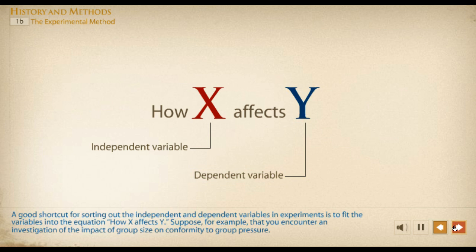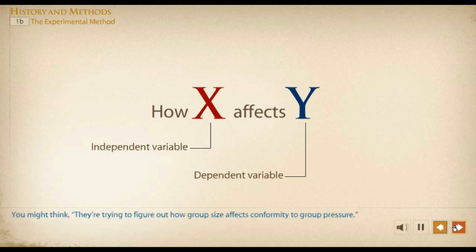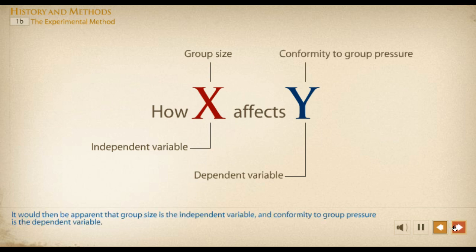A good shortcut for sorting out the independent and dependent variables in experiments is to fit the variables into the equation 'how X affects Y.' Suppose, for example, that you encounter an investigation of the impact of group size on conformity to group pressure. You might think they're trying to figure out how group size affects conformity to group pressure. It would then be apparent that group size is the independent variable and conformity to group pressure is the dependent variable.